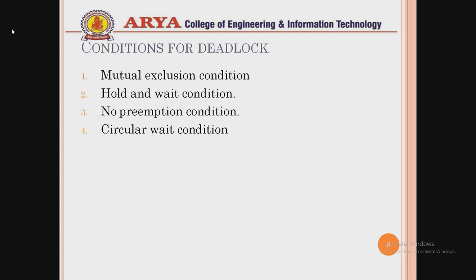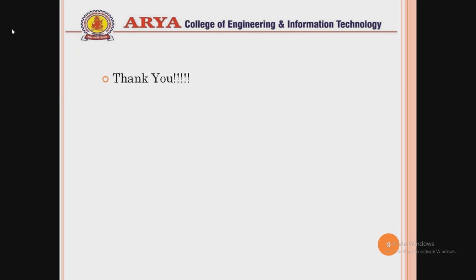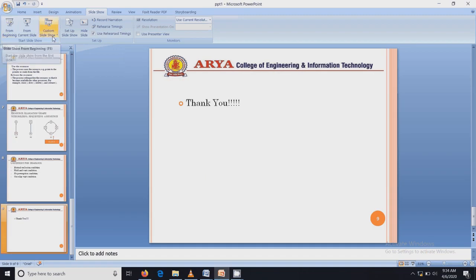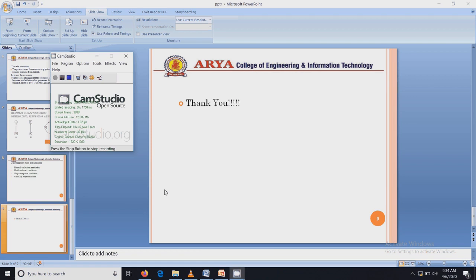In the next slide, we cover the conditions of deadlock. There are four conditions: mutual exclusion, hold and wait, no preemption, and circular wait. Before ending this session, I want to introduce mutual exclusion — in this condition, only one resource is available at a single particular time.